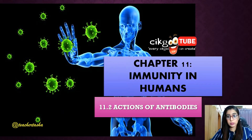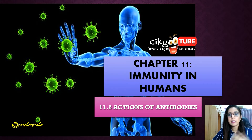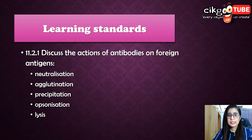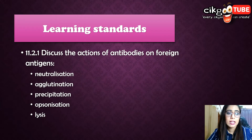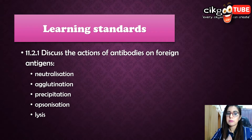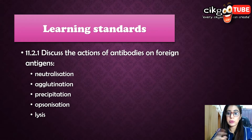Today we are going to continue on subtopic 11.2: Actions of Antibodies. This is a short subtopic. The learning standard is that you should be able to discuss the action of antibodies on foreign antigens. There are five actions: neutralization, agglutination, precipitation, opsonization, and lysis.